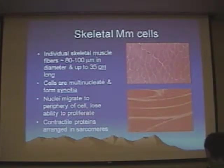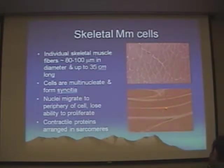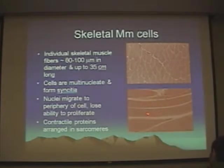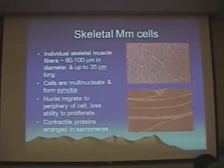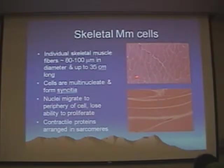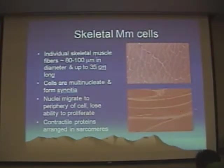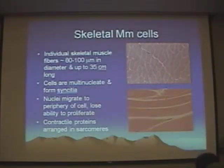Skeletal muscle fibers have nuclei that are generally located at the periphery of these large multinucleated fibers. So when you look at a cross-section, these nuclei are often at the points of these polygons. And in longitudinal section, skeletal muscle often has a distinct banding pattern.